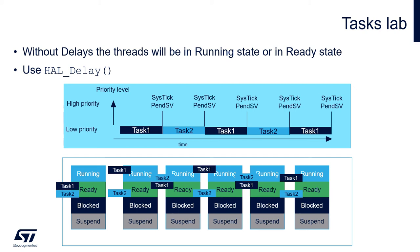Task two executes until SysTick again triggers PendSV to switch context back to task one, and this continues continuously. During the one millisecond time slice, task one will send task_action one as fast as possible, executing as many iterations of its loop as possible. Importantly, when the context is switched, the current state of the task's code is saved on the task stack, so when it returns it resumes exactly where it left off.